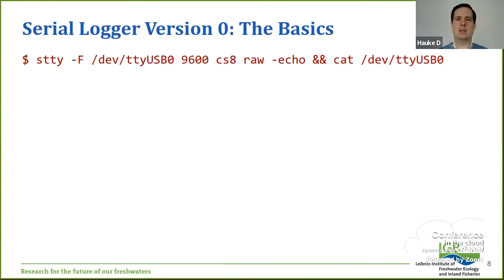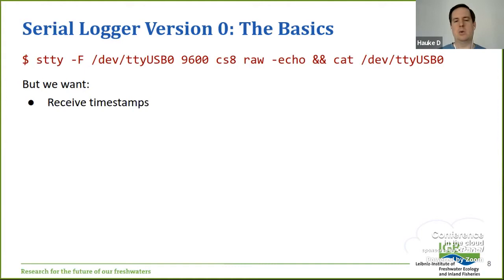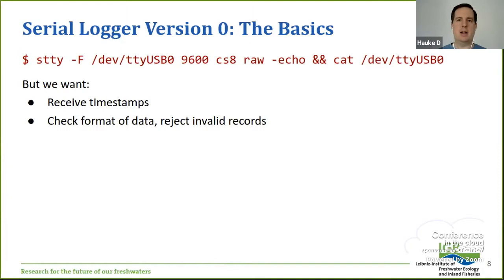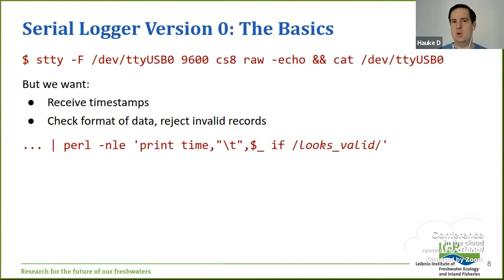I've spent a lot of time on the topic of serial ports. Unix has had support for serial ports forever — it's one of the very basic interfaces. You would normally configure a port with the stty command, setting baud rate, number of bits, parity bits, and so on. Then you have a device file you can treat like a regular file — read from it with cat to see arriving data, write to it to send data. But of course that's not really enough — we also want to log when data arrives, because a lot of sensors don't have their own internal clock, and we want to check whether data is valid, whether records got cut off, or whether there's noise causing transmission errors.